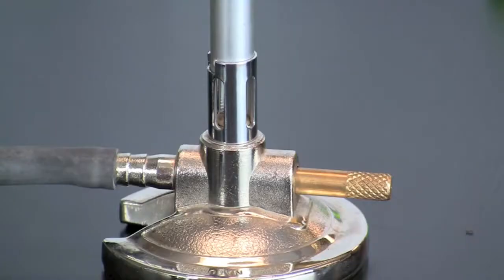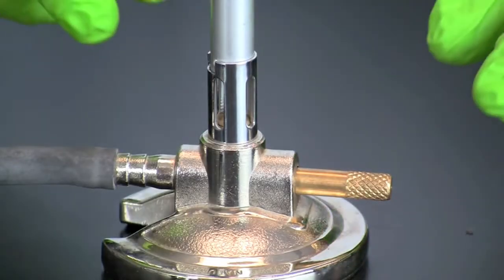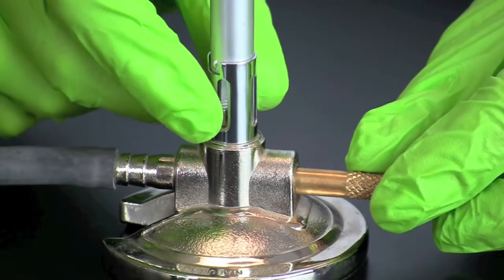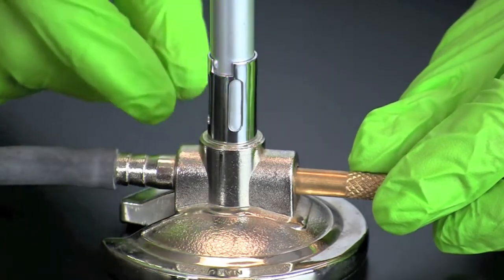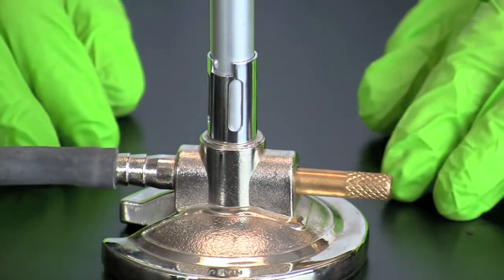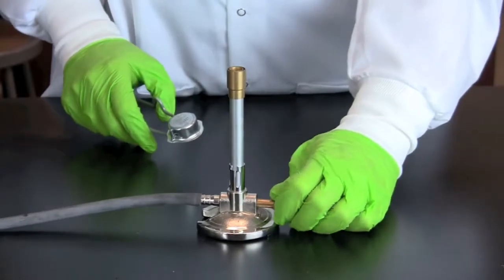To light a Bunsen burner, start by closing the valve at the base by rotating the collar so that the vents are covered. Then slowly turn on the gas.